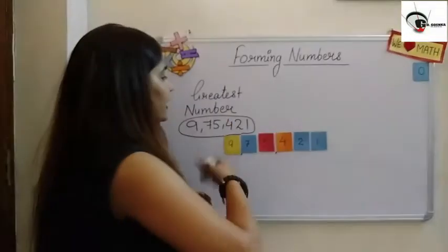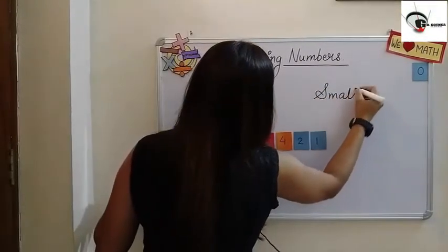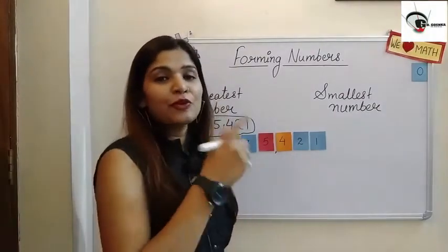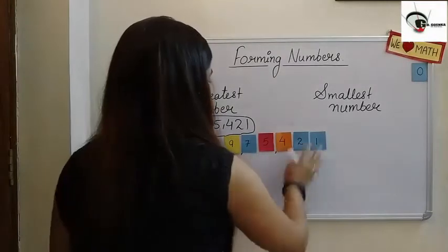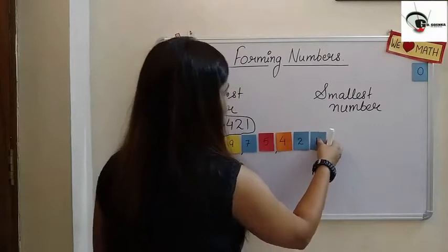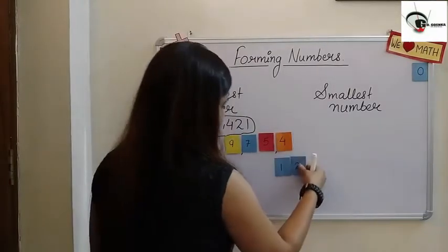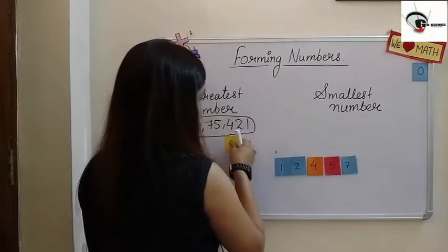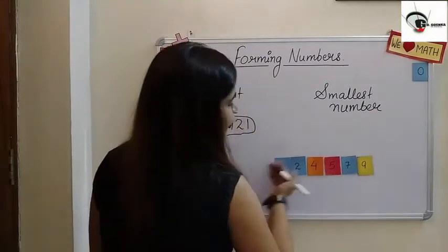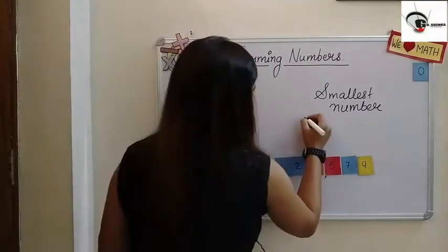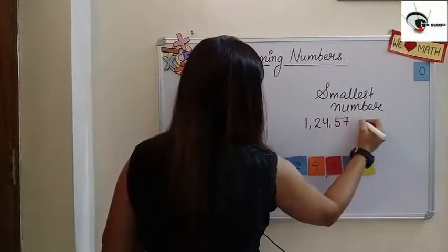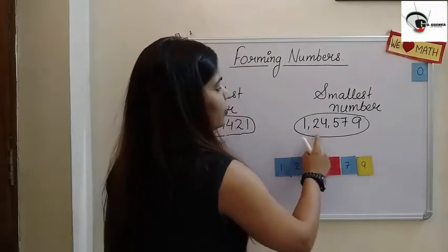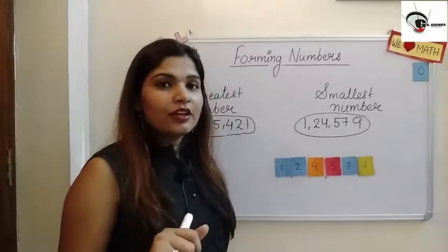Now let us find the smallest number. We have to use ascending order here, so we arrange these digits in ascending order — just reverse: one, two, four, five, seven, and nine. The smallest number formed by using these digits is one lakh twenty-four thousand five hundred and seventy-nine.